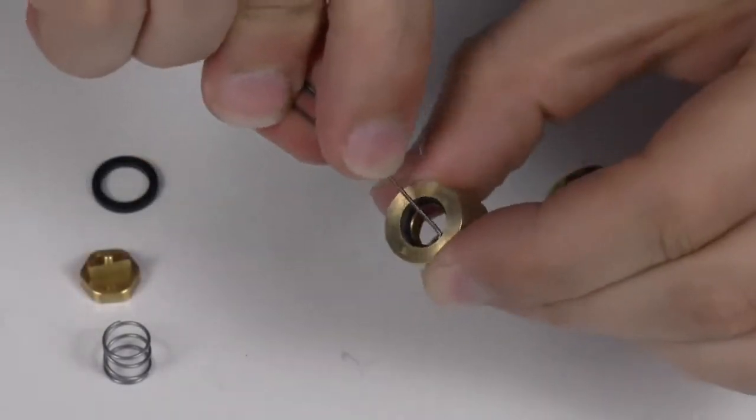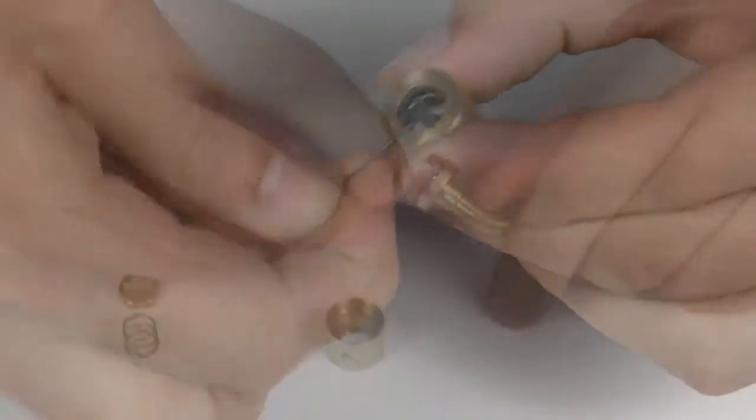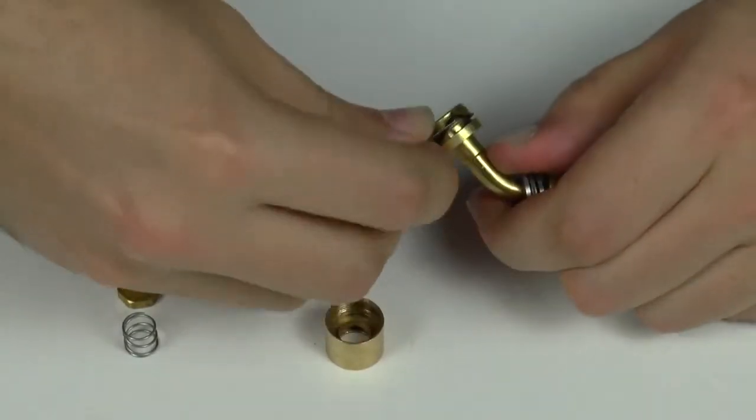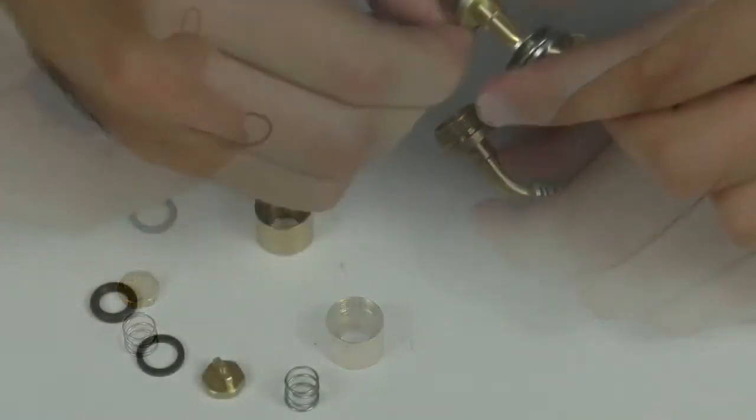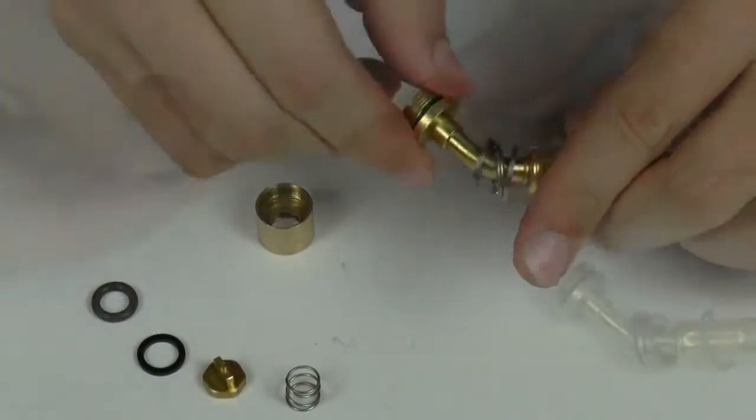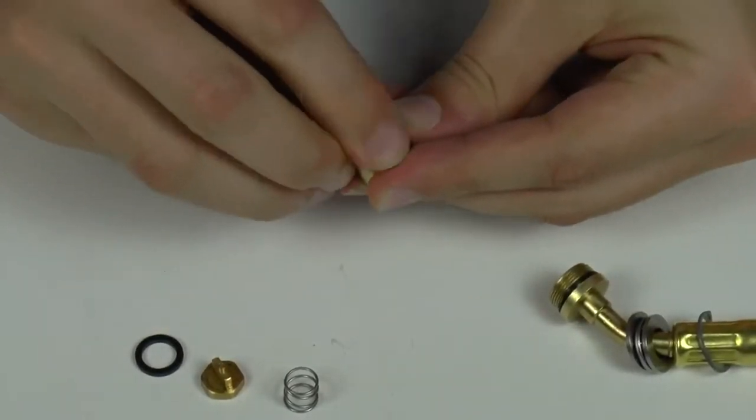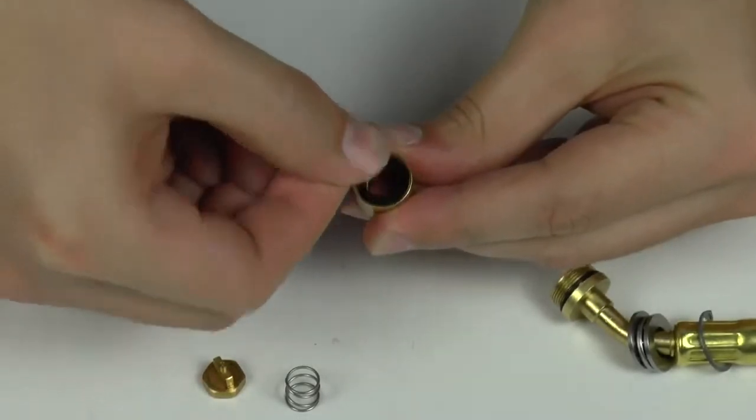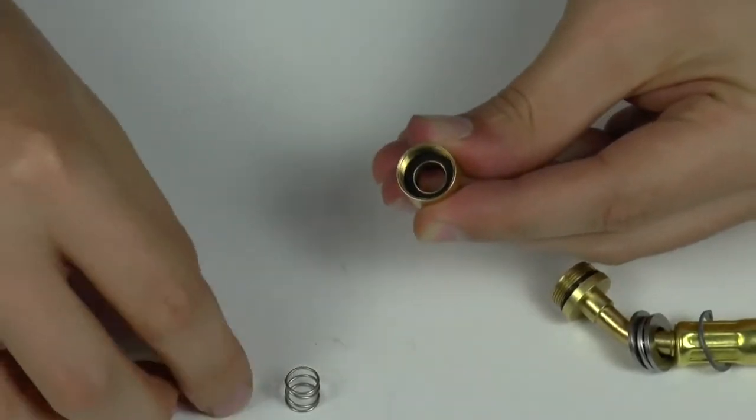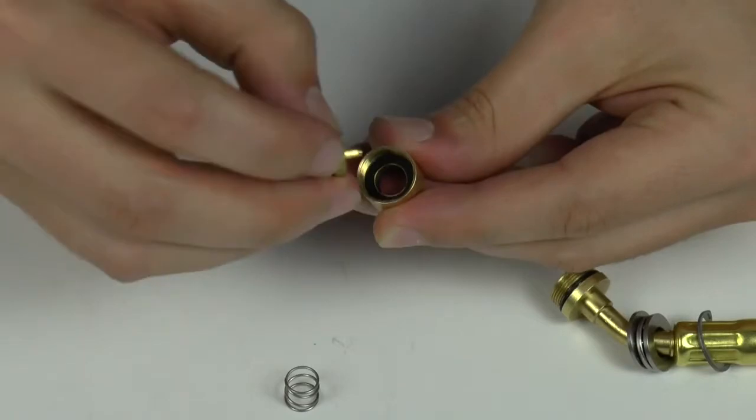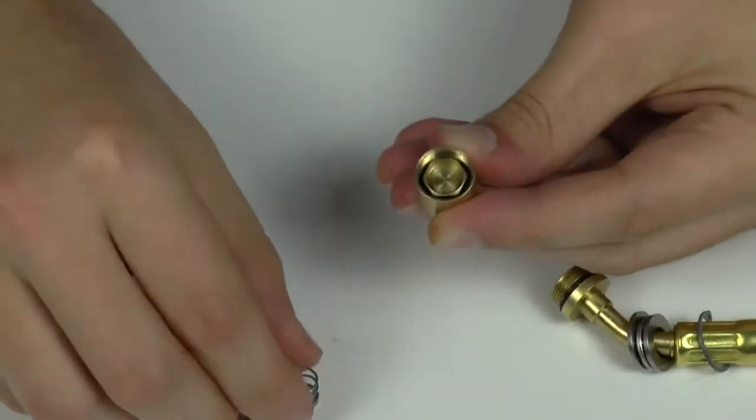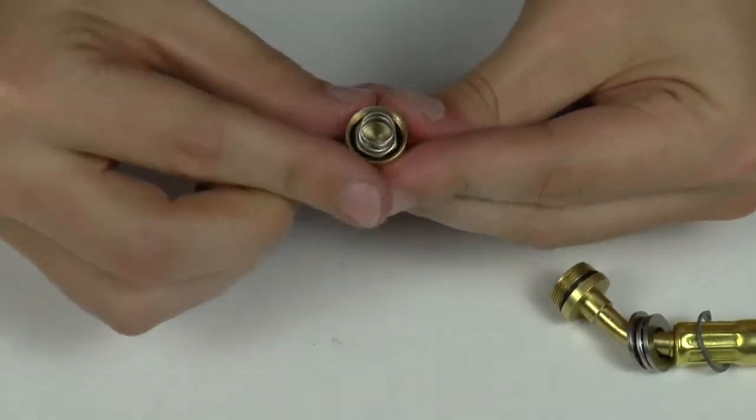Insert the new o-rings, square seat, and depressor. Replace the spring and close the housing.